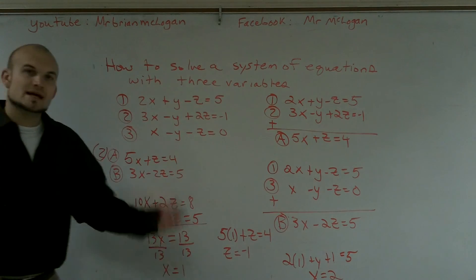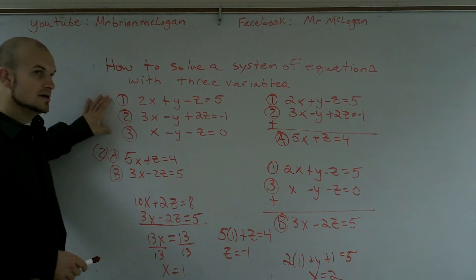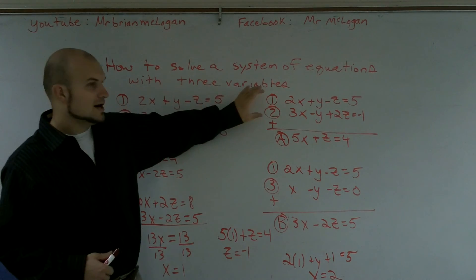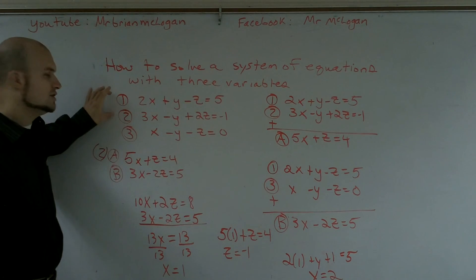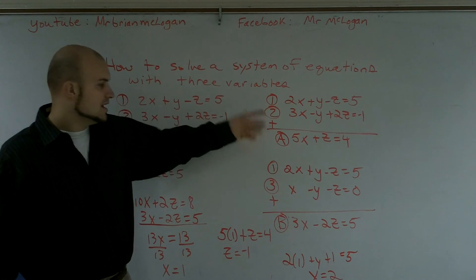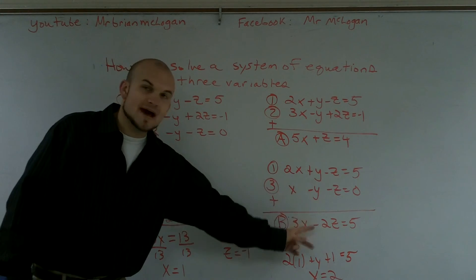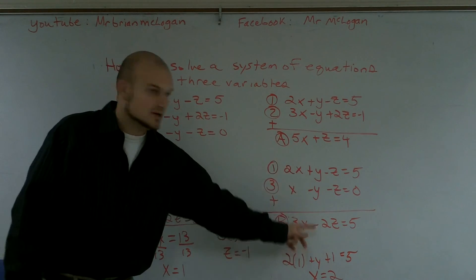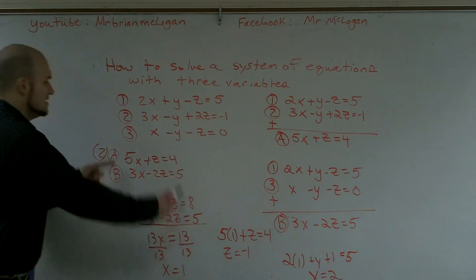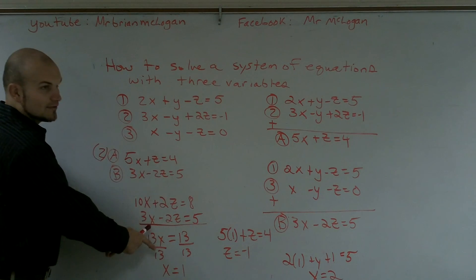The main important steps when solving a system of three equations are: first, label your equations; second, pick a variable to eliminate; third, pick two out of the three equations and eliminate to get a new equation; fourth, use elimination again with a different pair to get another new equation — making sure you eliminate the same variable both times; then use those two new equations with elimination or substitution to solve for the remaining variables.